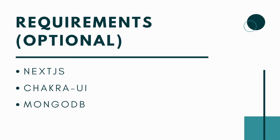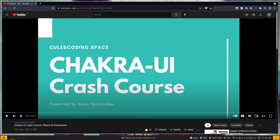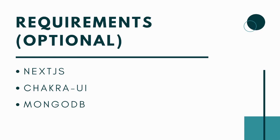For styles you can use anything you want — you don't need to use Chakra UI — but I am going to use it because it will make our work simpler. I have also made a Chakra UI crash course; if you want to learn about Chakra UI you can watch that video — the link will be in the description. And finally we need some kind of database; I'm choosing MongoDB because it is pretty simple, but you can use whatever database you want.